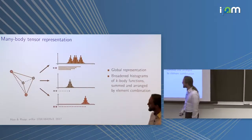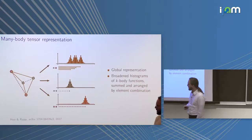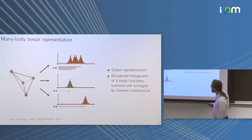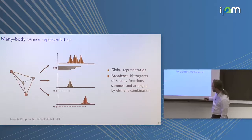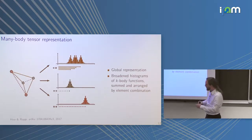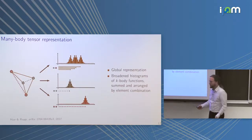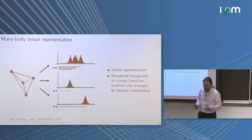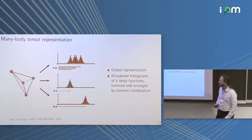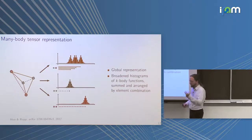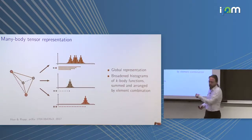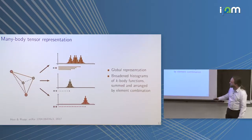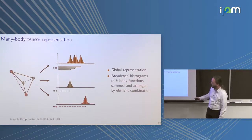Last is ours: the Many-Body Tensor Representation (MBTR). This is not a local representation, although Patrick Rinker from Aalto made it so. You stratify by element combinations — looking at all carbon-carbon or carbon-hydrogen pairs separately — and for each combination, for two-body terms, you look at the distances and construct a histogram. For three-body terms you take a function of k atoms and put the result in a histogram. It's the most simple thing you can do, and you describe the whole molecule or material — not just a single atom's environment.